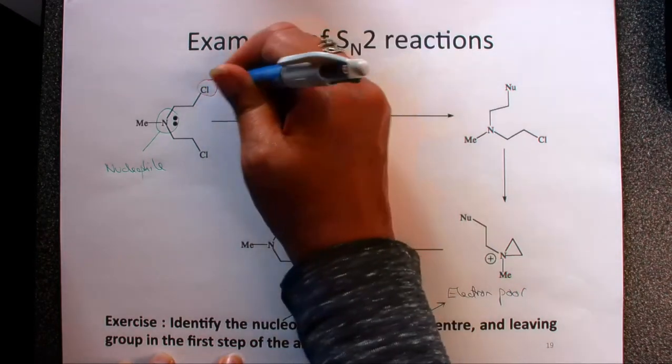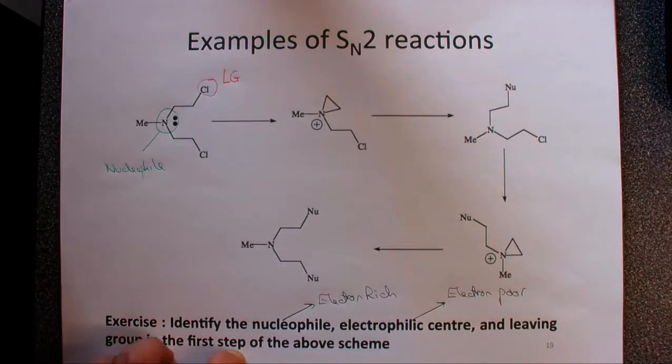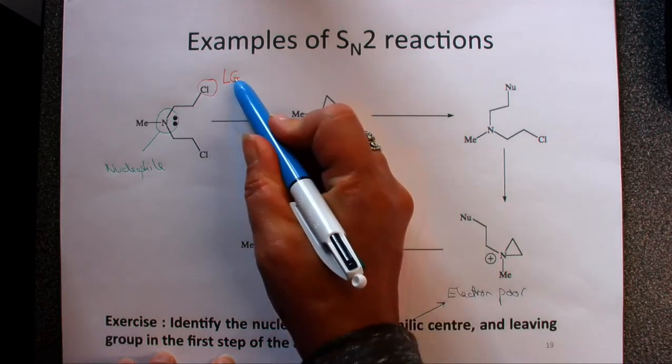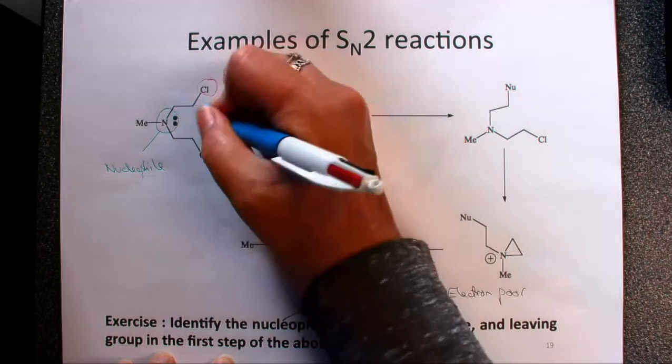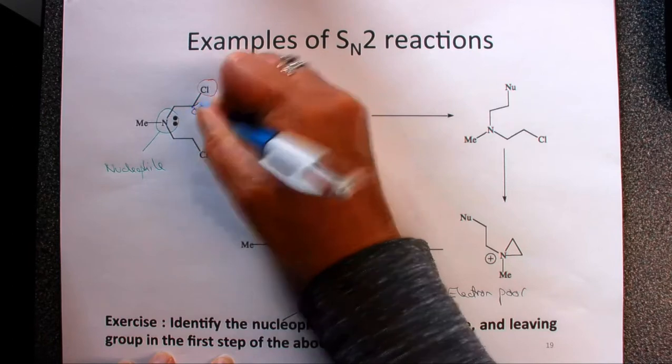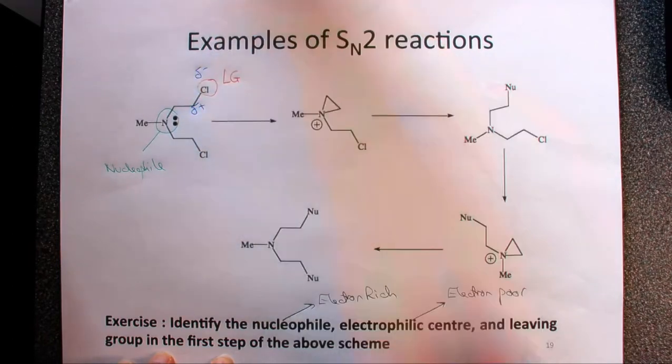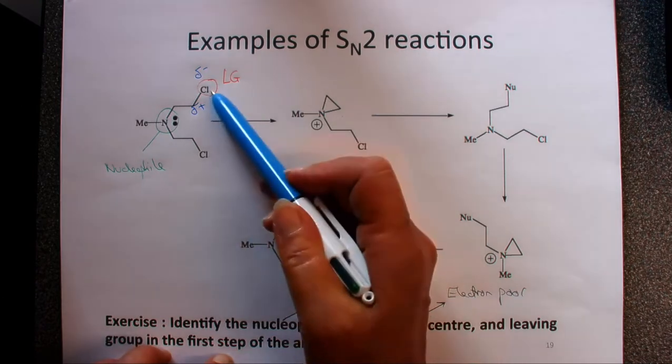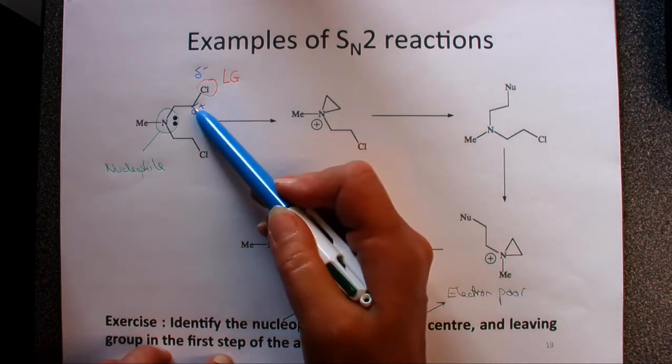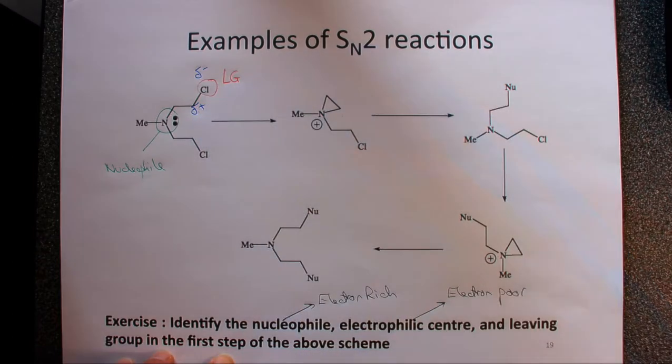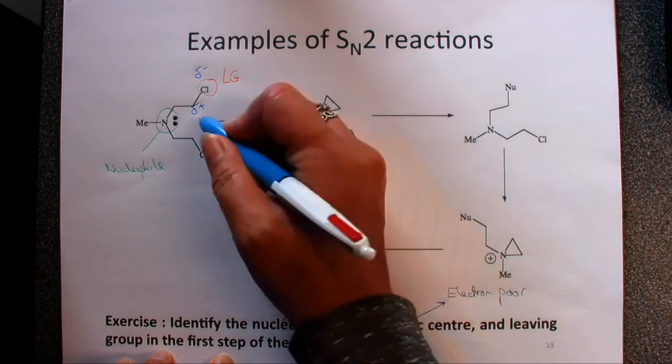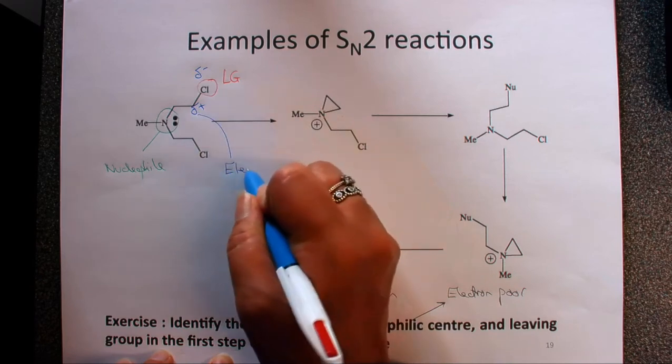The electrophilic center, that's the last thing we're looking for. Because this is the leaving group and it's polarizing, this is going to be polarized - this is going to be slightly positive, that's going to be slightly negative, just by virtue of the electronegativity difference between the chlorine and the carbon. So this part here which is slightly positive, that is going to be our electrophilic center.